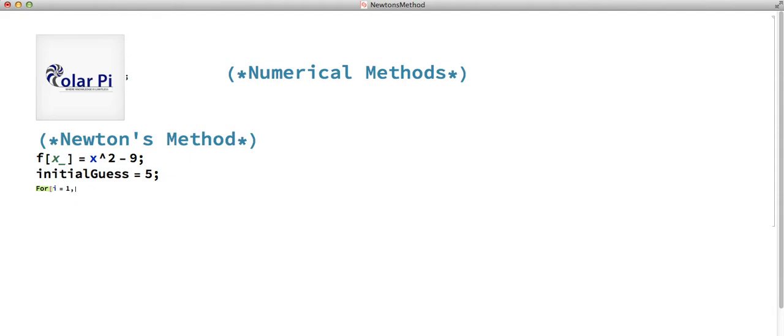So starting with 1, i less or equal to 10, so 10 iterations, i plus plus. And this i plus plus is telling it to start with 1 and then go to 2 and so on.